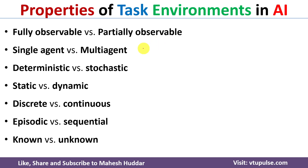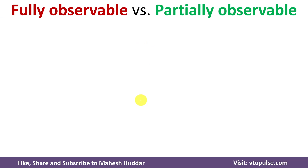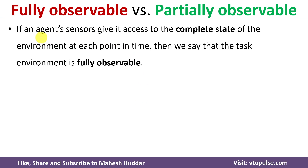We will discuss each of these in detail one by one. The first one is fully observable versus partially observable. We have already discussed the components of an agent — an agent contains sensors, and based on sensor input it will make a decision and perform actions with the help of actuators. If the agent's sensors give complete access to the environment at any given point of time, then it is called fully observable.